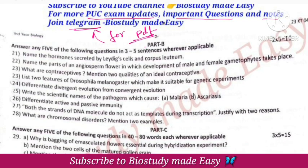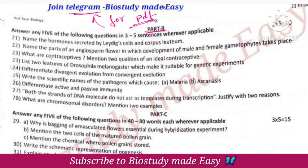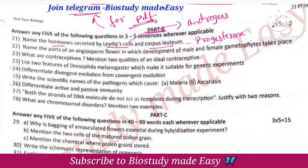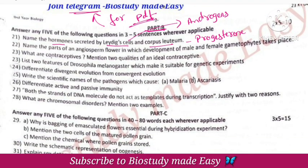Part B: Hormone secreted by Leydig cells and corpus luteum — corpus luteum secretes progesterone, and Leydig cells secrete androgens. Name the parts of angiosperm flower in which development of male gametophyte occurs: androecium. Female gametophyte development occurs in the gynoecium.